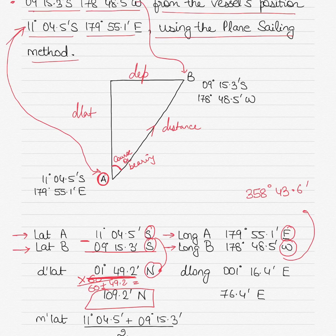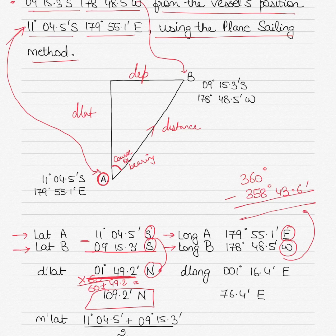Because D long cannot be more than 180°, I subtract from 360°. 360° minus 358°43.6' gives 001°16.4'. And this is the D long: 001°16.4'.